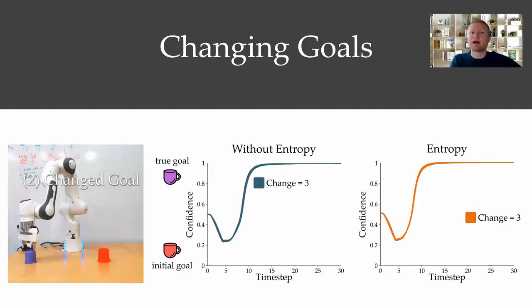On the left, we show a simulated human interacting with a latent space that does not encourage entropy. If the simulated human changes their mind early in the task, let's say at time step three, they can reach their true goal.